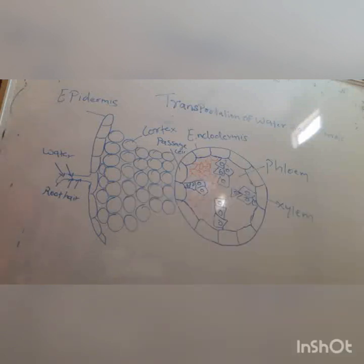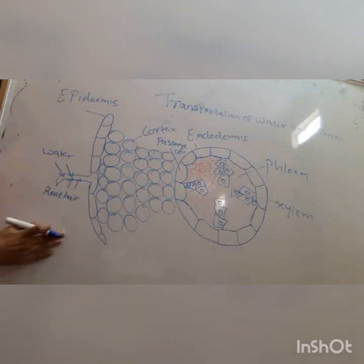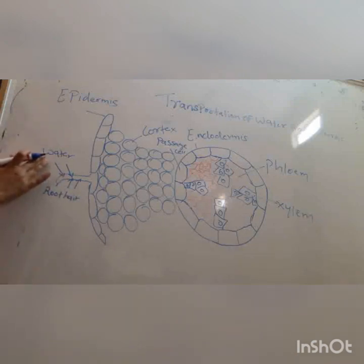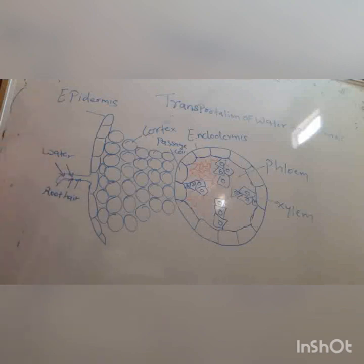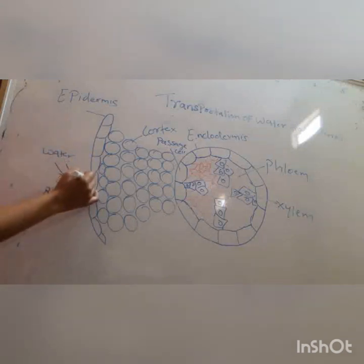Here is the soil. Soil consists of water, which also has some dissolved minerals in it. As the water moves inside the root through root hair, it will come towards the epidermis.